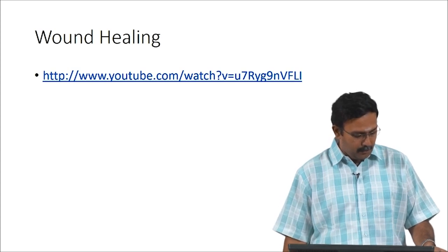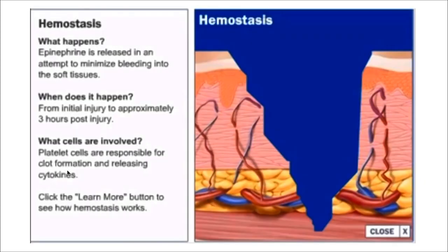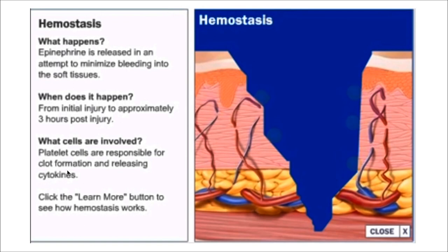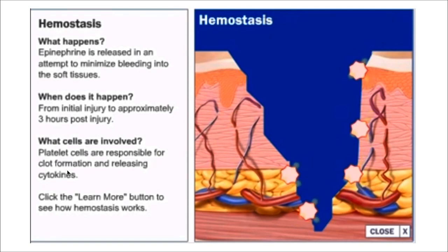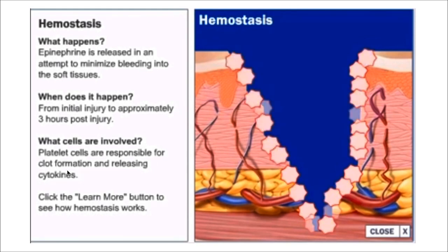The key cell responsible for initiating wound healing is the platelet, which causes the body to form a clot to prevent further bleeding. There is increased aggregation of platelets to enable the wounded vessel to complete the clotting process. The objective of the hemostasis phase is to control bleeding.